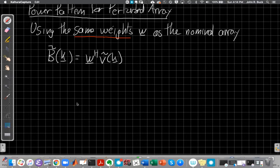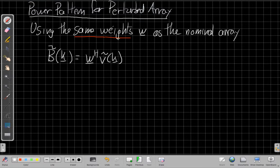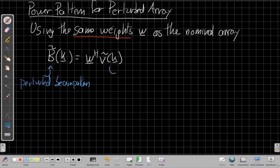So now we have the power pattern for the perturbed array. We're using the same weights w as the nominal array. The model we're taking in mind here is that we don't know the array has been messed with. So we think we've got our nice, perfect, pristine array. And we've designed our array weights to work with that perfect ideal array. But in reality, sloppy construction or wear and tear or whatever has perturbed the elements away from where we think they are. So this B tilde is our perturbed beam pattern. And we find that by applying the same weights, but now the manifold vector is also, we have a perturbed manifold vector.